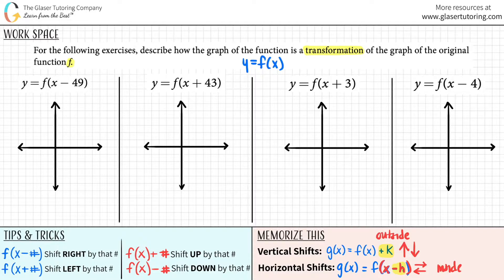So if you have a x minus a number, you're always shifting to the right. If you have x plus a number, you're shifting to the left. And then if you have your function plus a number, shifting up and then minus a number shifting down.